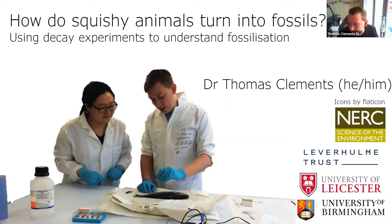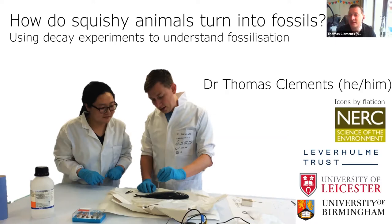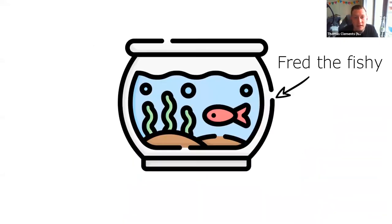Hi, my name is Dr. Thomas Clements. I work at the University of Birmingham. I'm a paleontologist and I specialize in trying to understand how fossils form. Today I'm going to give you a whistle-stop tour of how an animal can become a fossil, and we're going to be using the example of my pet Fred the fish.